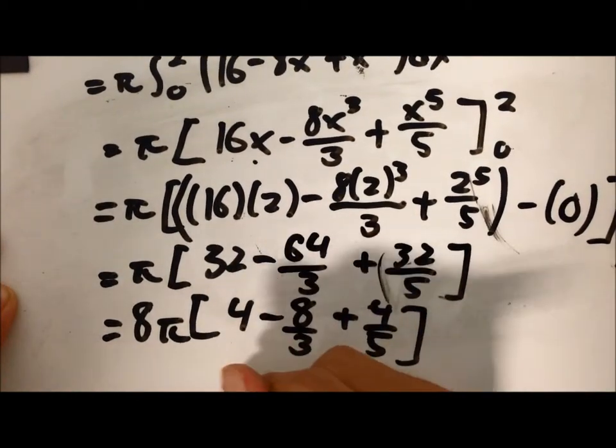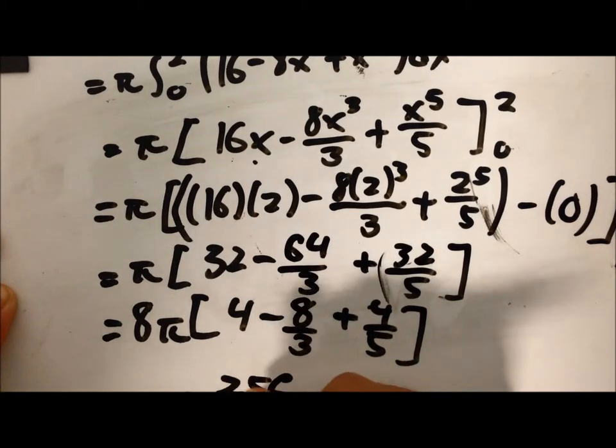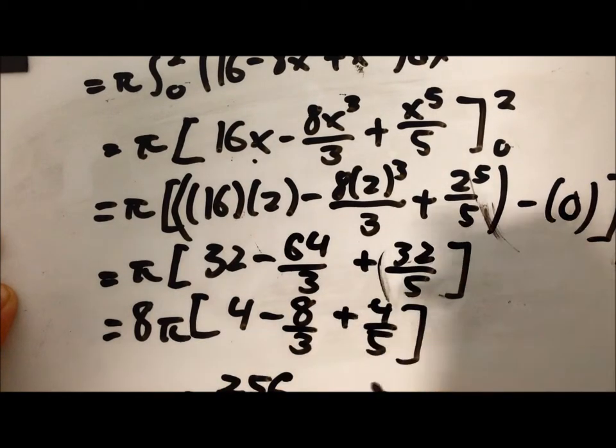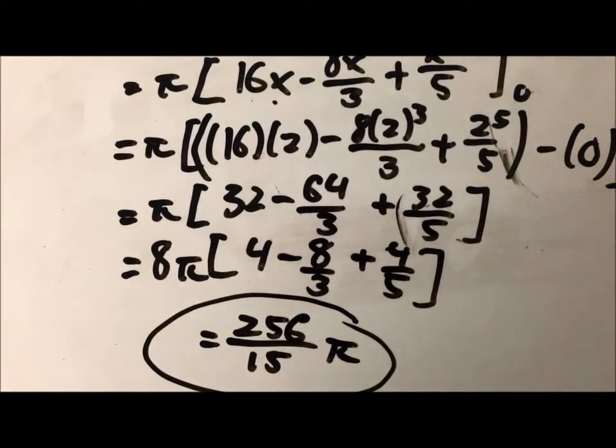Which will give you an answer of 256 over 15 pi. And that is the volume of a cross-section.